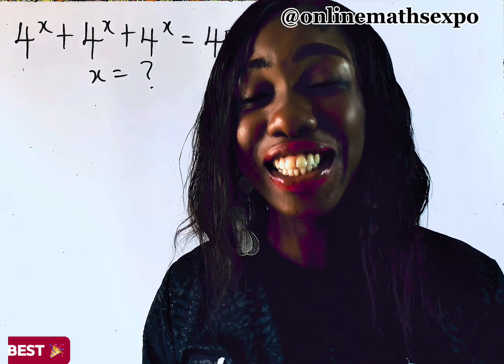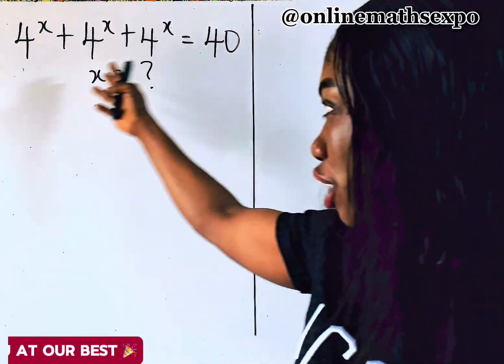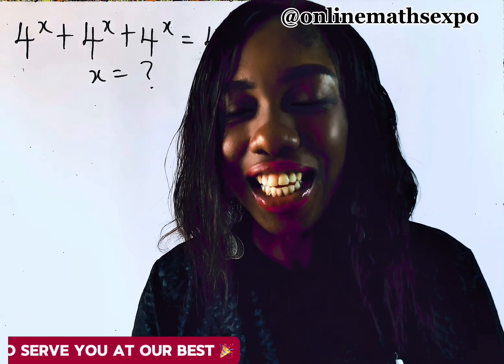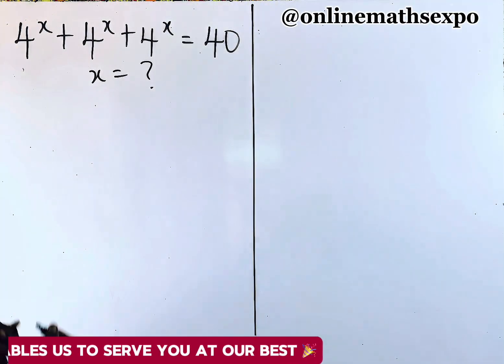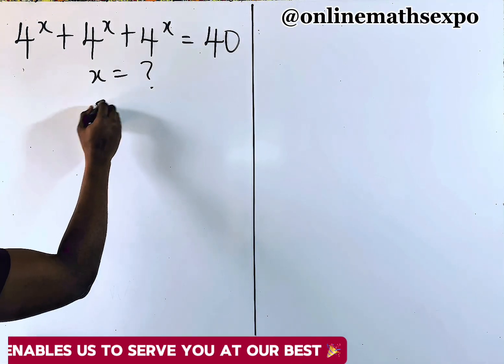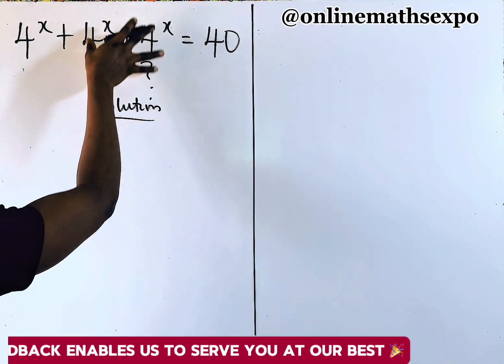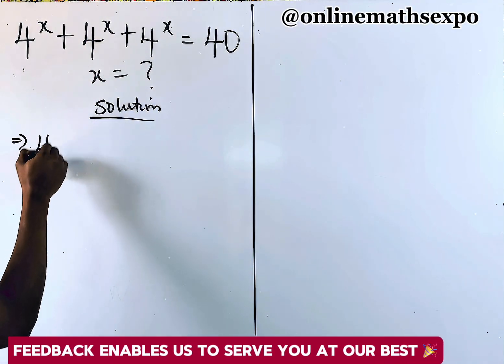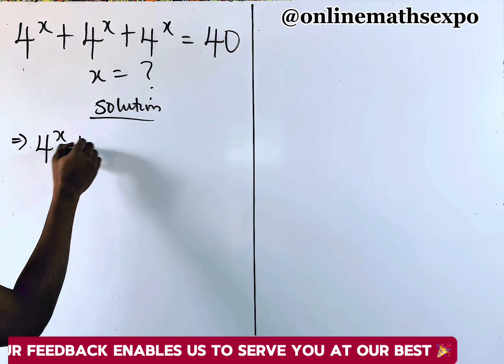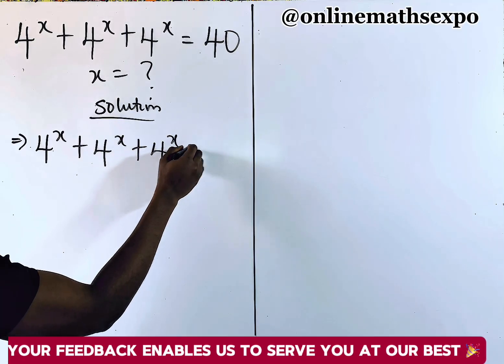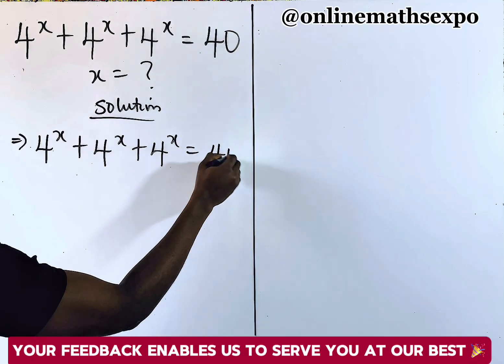Hello, join me as I teach you how to solve this beautiful exponential equation. It's just so easy. Let's do this together. We're going to begin this with the solution. So let's repeat what we have: 4 to the power of x plus 4 to the power of x plus 4 to the power of x is equal to 40.